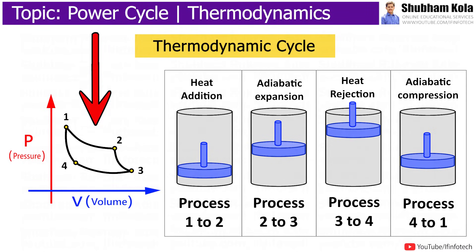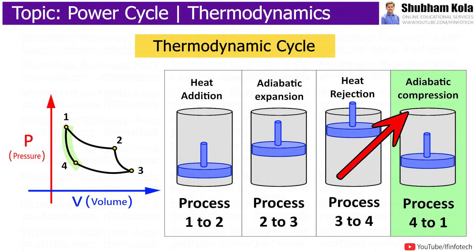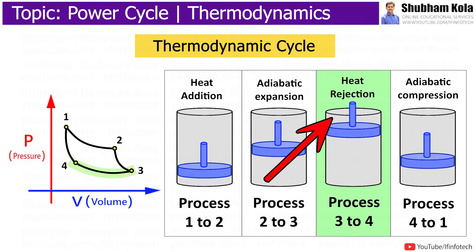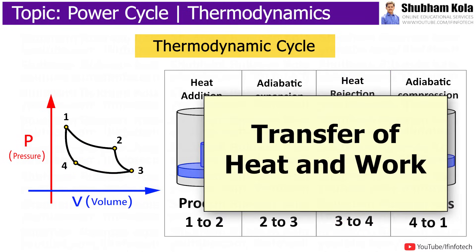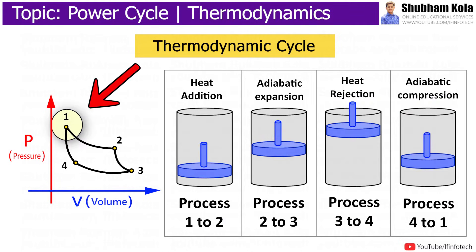Power cycles consist of a linked sequence of four thermodynamic processes: compression, heat addition, expansion, and heat rejection. These involve the transfer of heat and work while varying pressure, temperature, and other state variables within the system, and eventually return the system to its initial state.